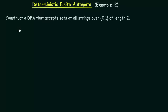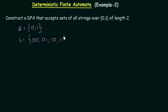Our alphabet set is 0 and 1, as already mentioned. We have to construct a DFA that accepts the set of all strings over 0,1 of length 2. The set of all possible strings of length 2 over 0,1 are: 00, 01, 10, and 11. These are the only 4 inputs that should be accepted by the DFA, and it should reject all other strings.